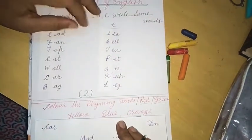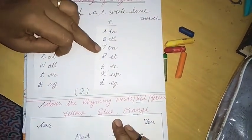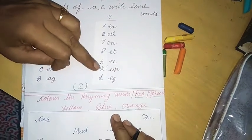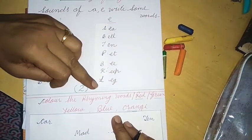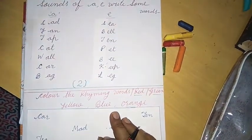So see C, Bell, Ten, Pet, B, Keep and Leg. We have become complete words.